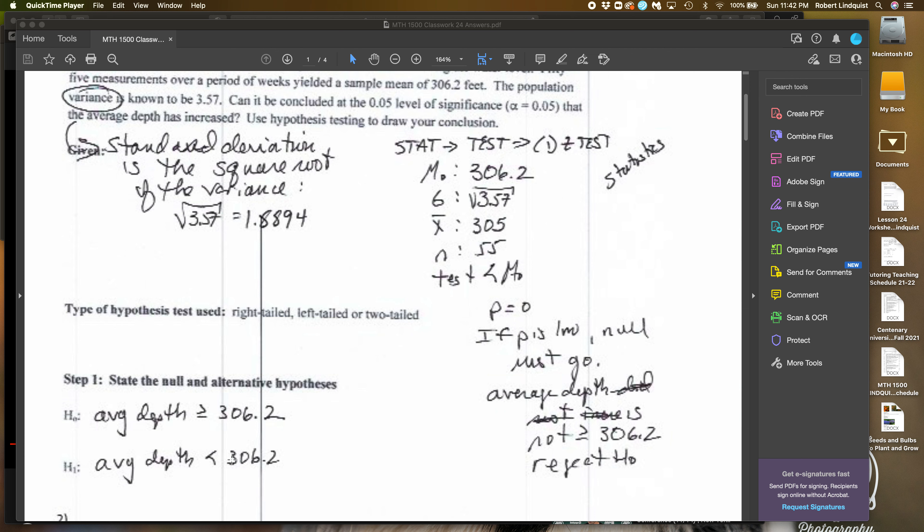Now, we're going to test the data. So we're going to go to stat and then test, which is the third column over, and then choose the first test, which is the Z test. And what we're really going to do is see what is the probability of this happening? And if the probability is, if it's likely that this is happening, then it is. And if it's not, it's not. So the calculator will tell us that.